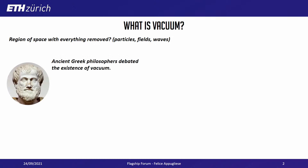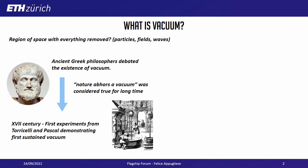The existence of vacuum was debated since the very beginning of mankind, especially from the ancient Greek philosophers who were debating whether this was possible at all. For a long time, Aristotle's thesis of 'nature abhors a vacuum' was considered true — the idea that matter will try to fill any kind of void by moving. This was believed until the 17th century, when experiments from Pascal and Torricelli showed that it was actually possible to sustain vacuum.